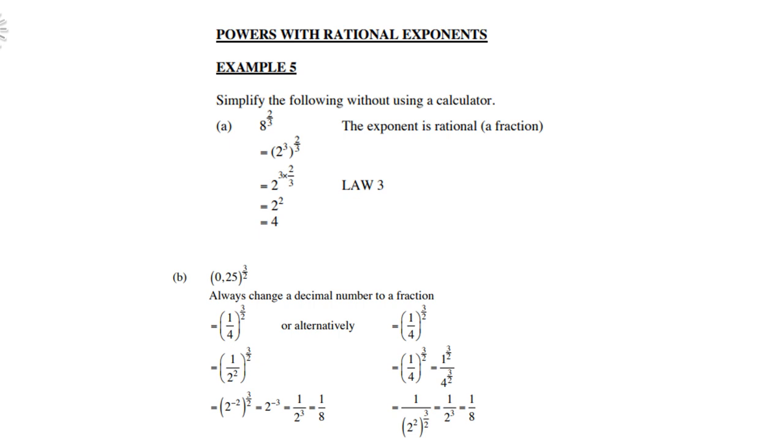The whole idea here will be prime numbers. Like 8, for instance, will be 2 to the power of 3, then you multiply the two exponents: 3 times 2/3 according to Law 3, and that should give you 2 squared, which is 4.